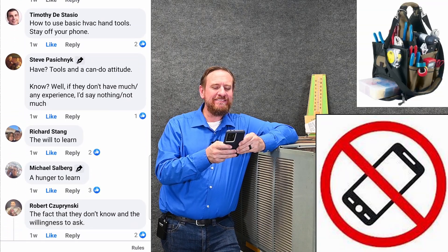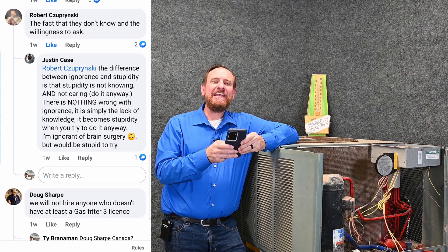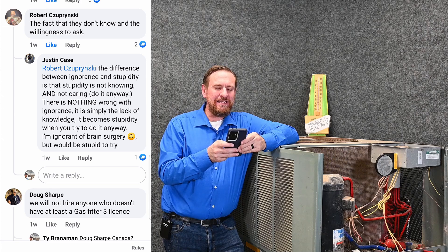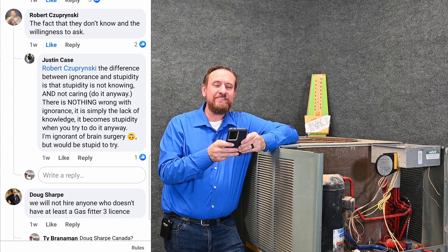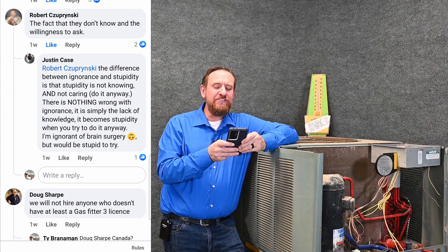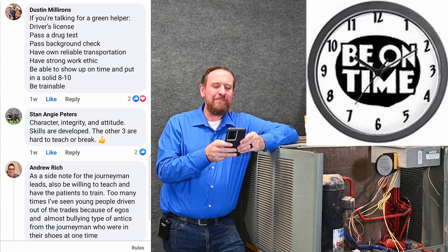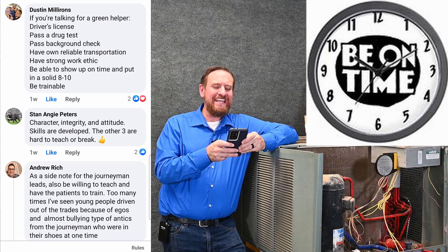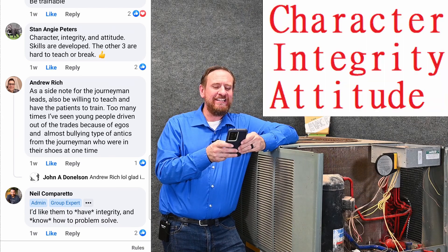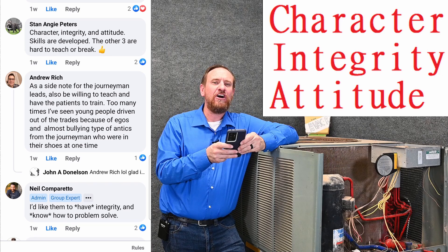Timothy added: how to use basic HVAC hand tools and stay off your phone. Steve wrote: have tools and a can-do attitude. Michael said: a hunger to learn. Robert added: the fact that they don't know and the willingness to ask. Justin replied adding: the difference between ignorance and stupidity is that stupidity is not knowing and not caring, doing it anyways. There is nothing wrong with ignorance, it is simply the lack of knowledge. It becomes stupidity when you try to do it anyways. Stan added: character, integrity, and attitude. Skills are developed. The other three are hard to teach or break.